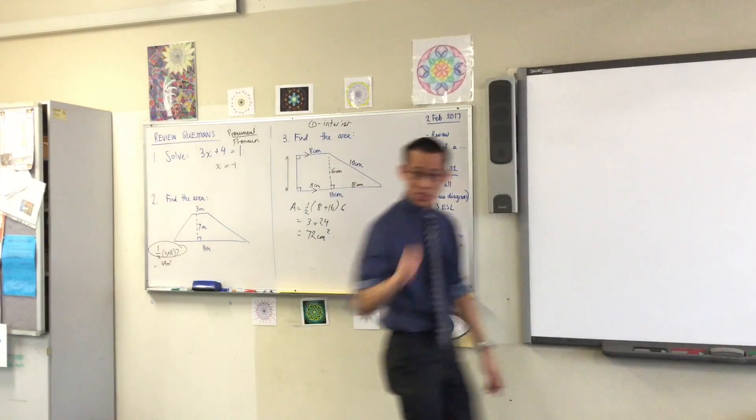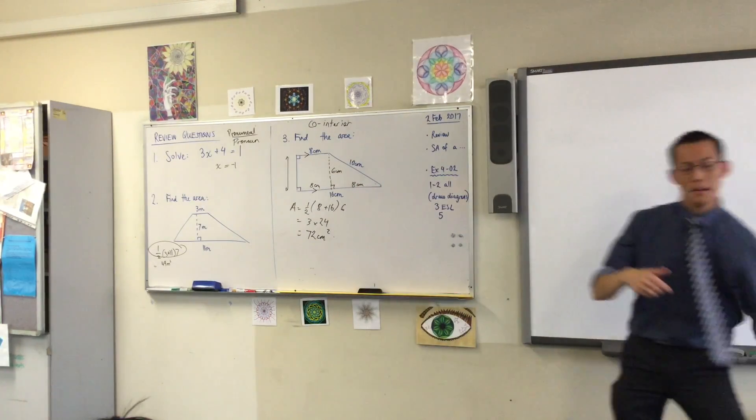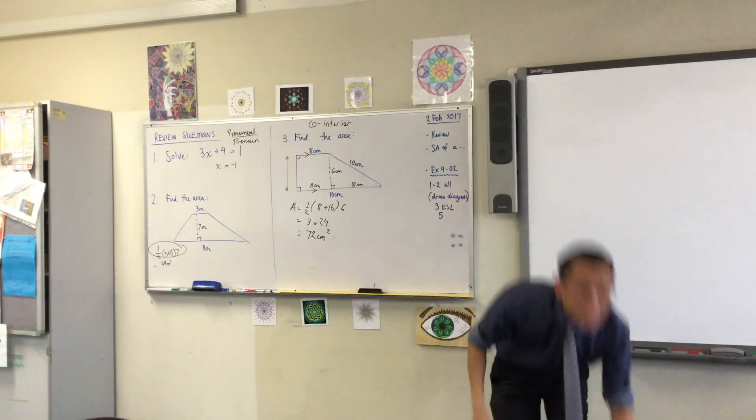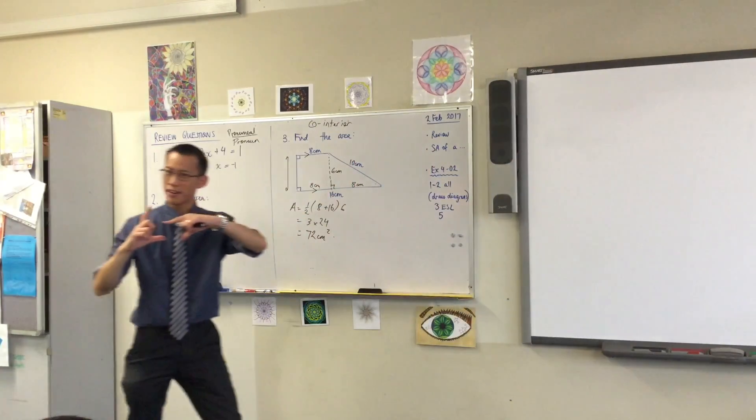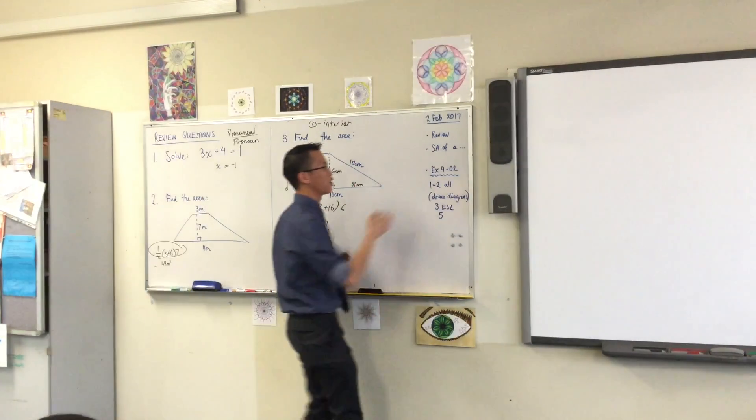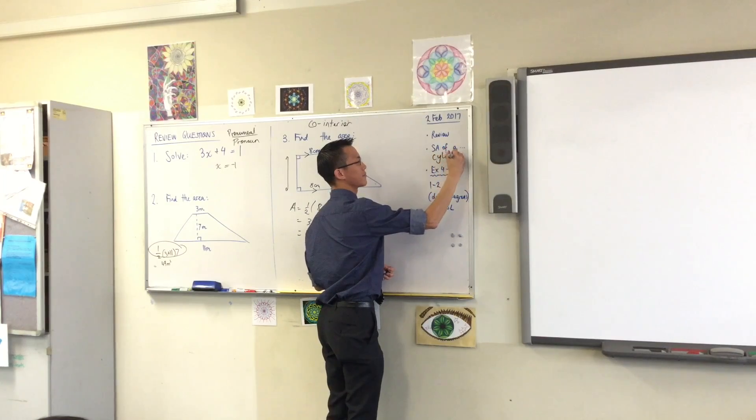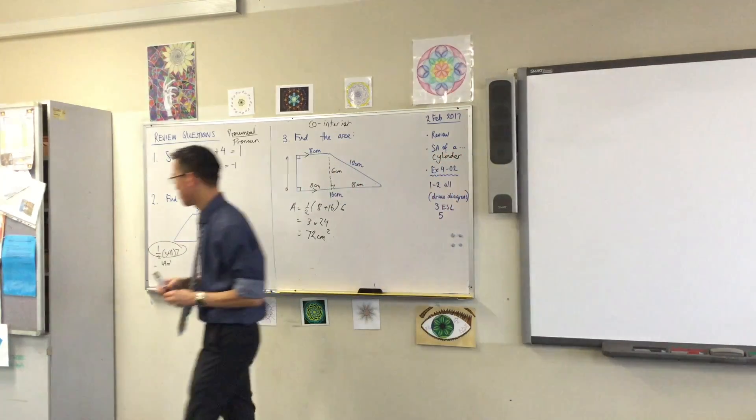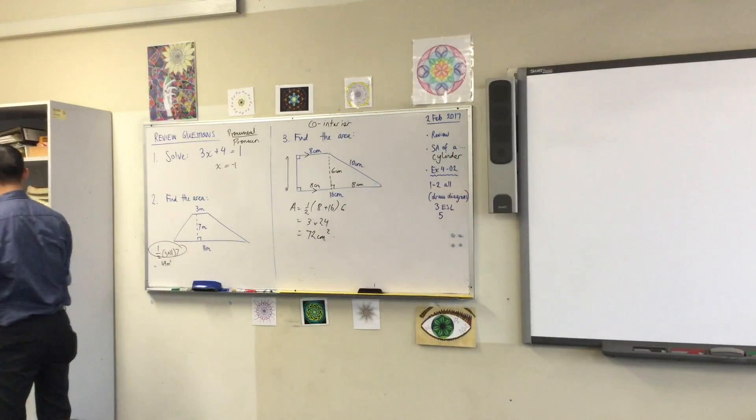But today we're going to look at a shape which still has consistent cross-section but whoopsie daisy, does not have a polygon as its cross-section. The shape we're going to look at is a cylinder. Now you should draw one of these.